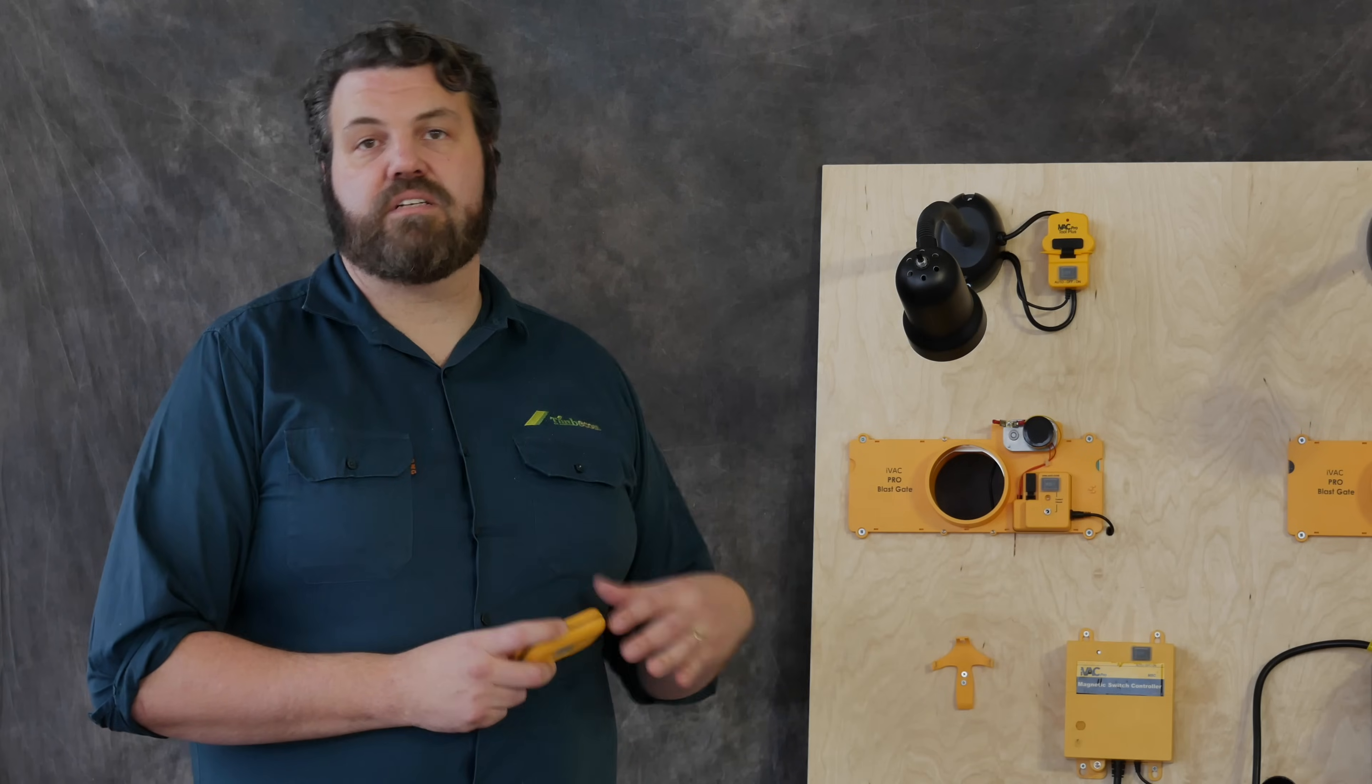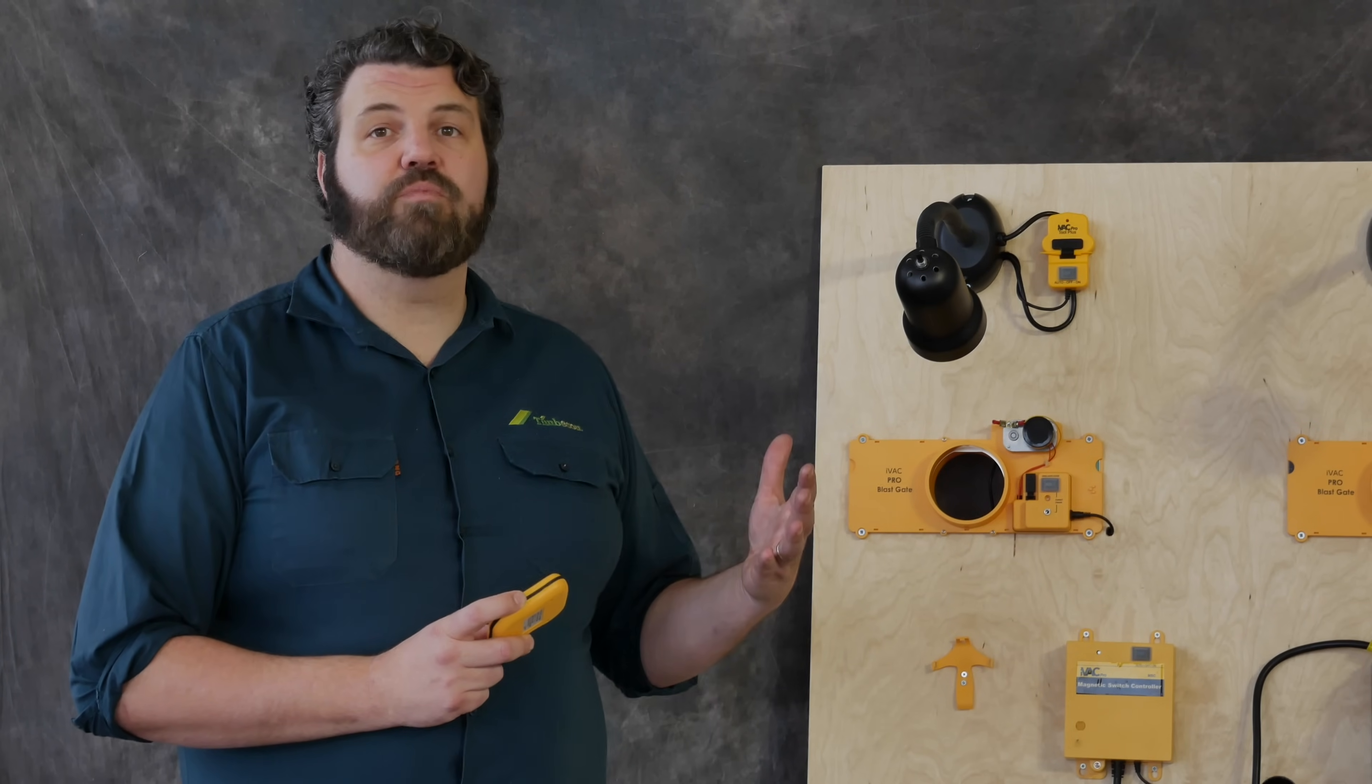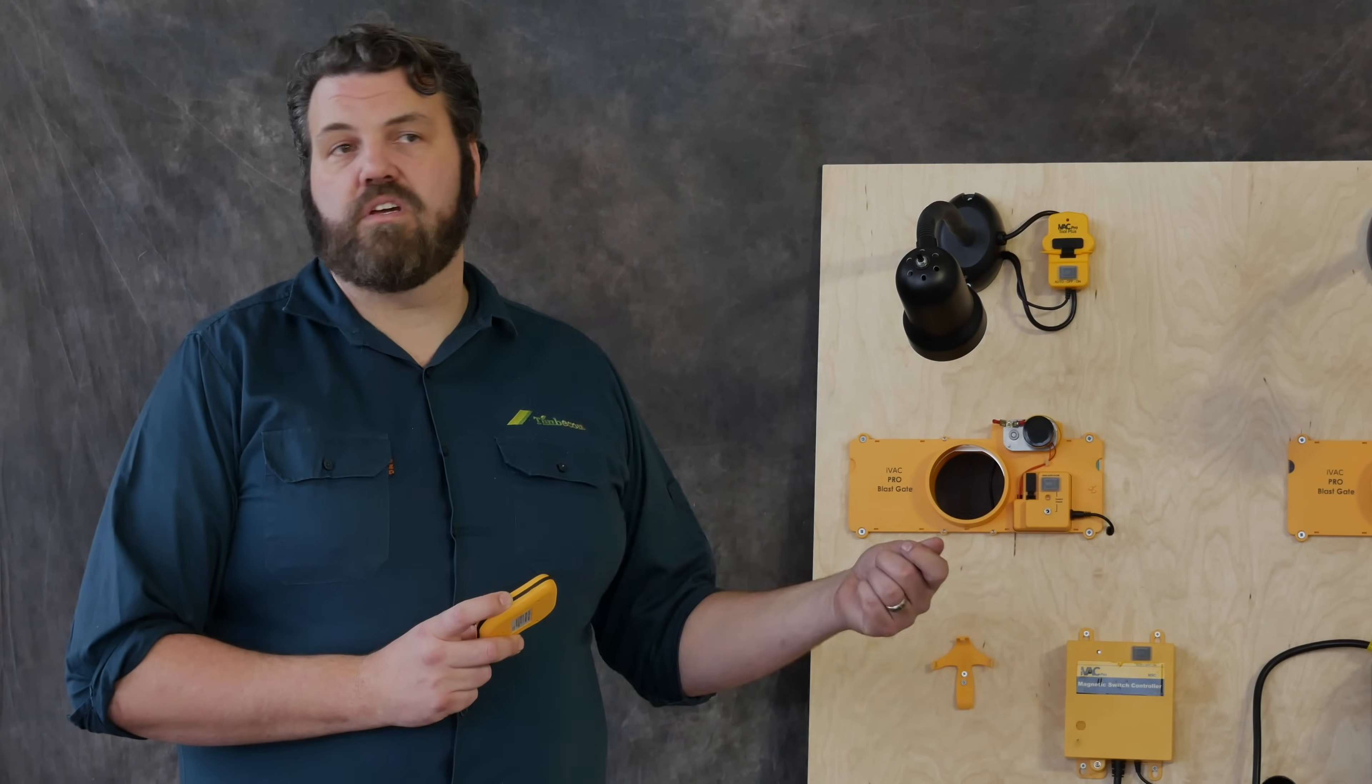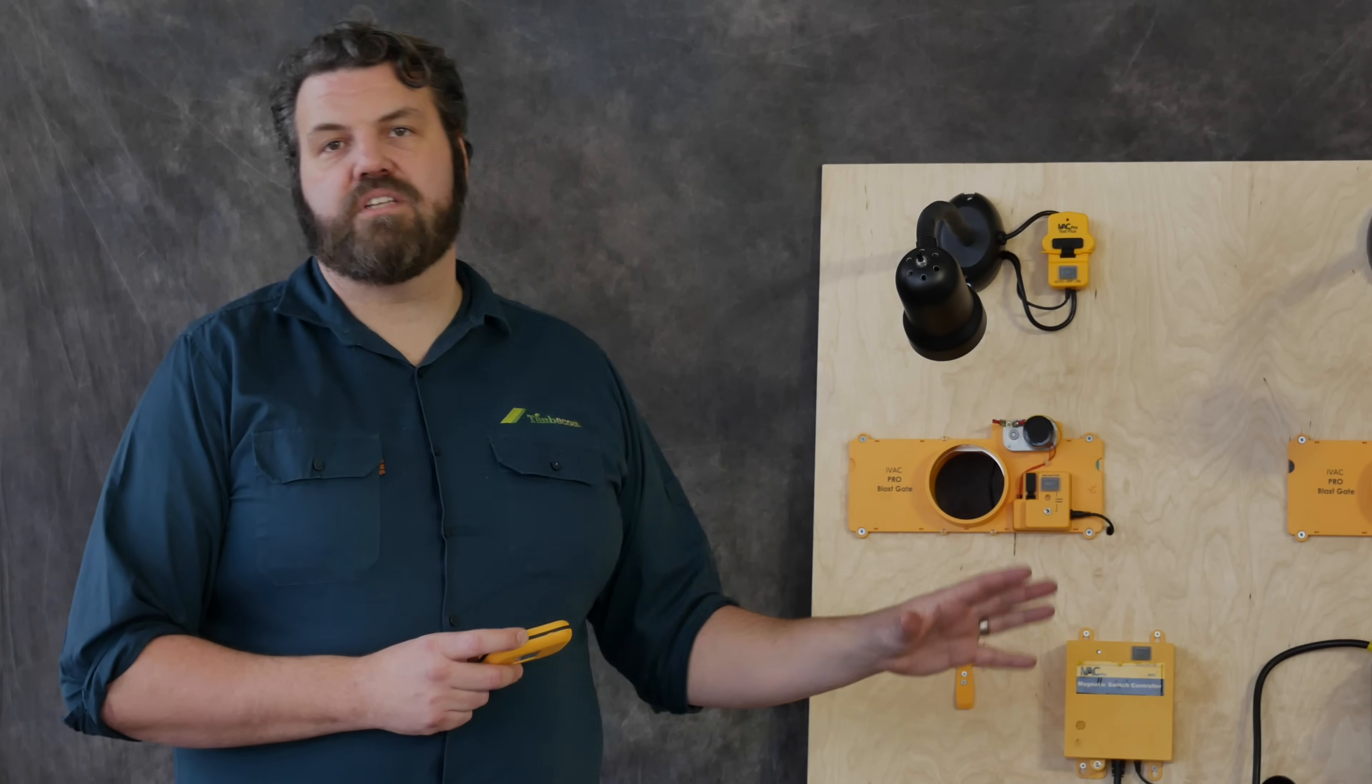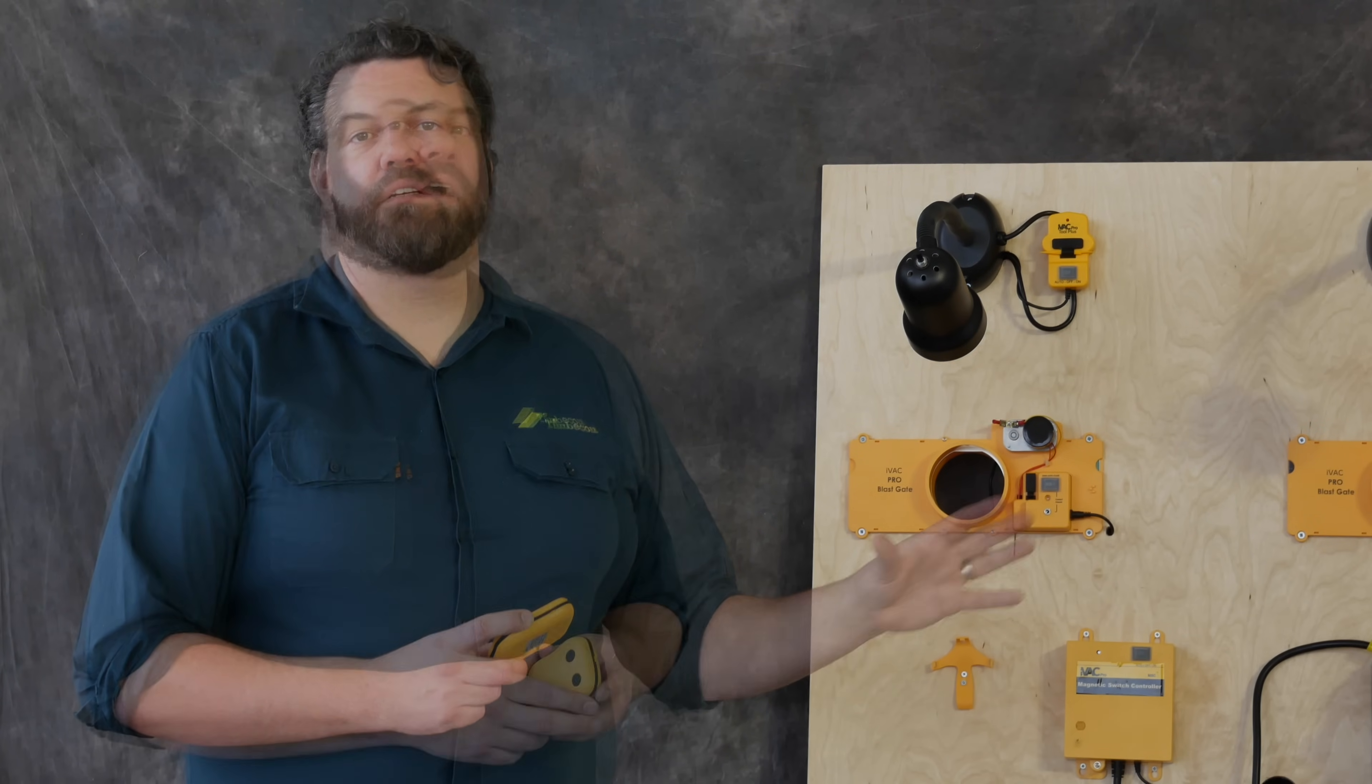The dust extractor will run for at least five minutes, which means you can turn your table saw on, do a test cut, turn it off, adjust it, so on and so forth, and it won't damage the motor on your dust extractor.